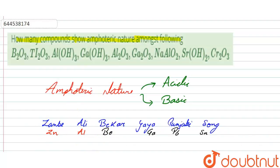So in the question we have given BeO₂, so this will not show amphoteric nature. Tl₂O₃, this will also not show amphoteric nature. This will show amphoteric nature, this will show amphoteric nature.